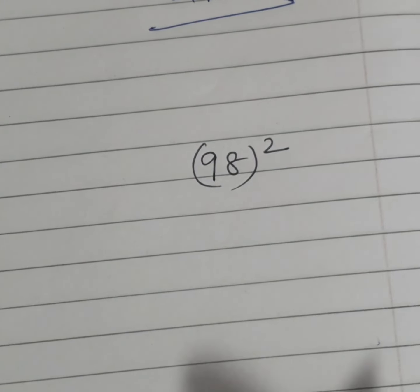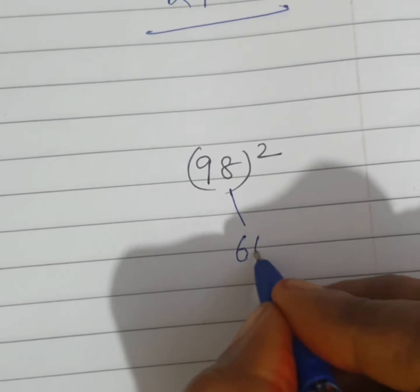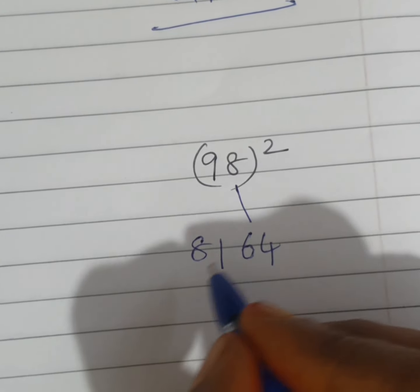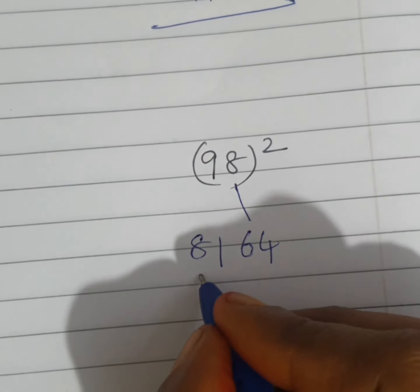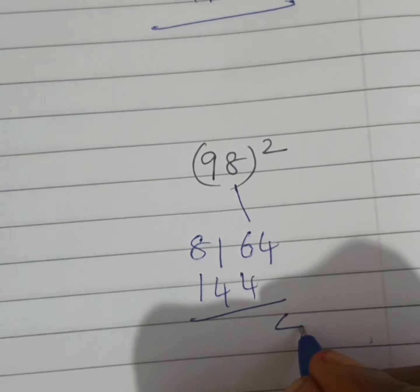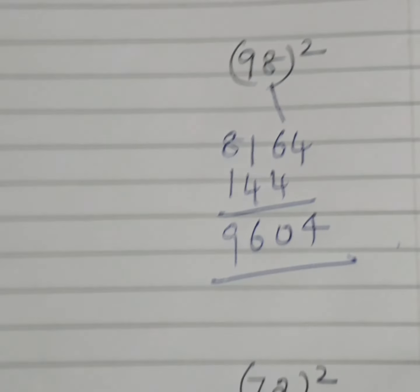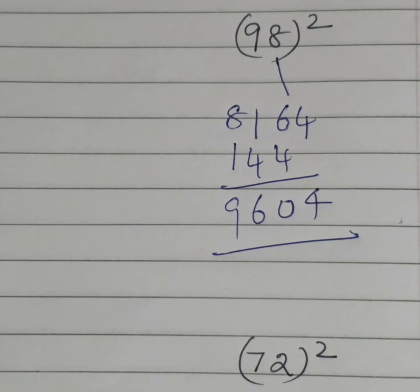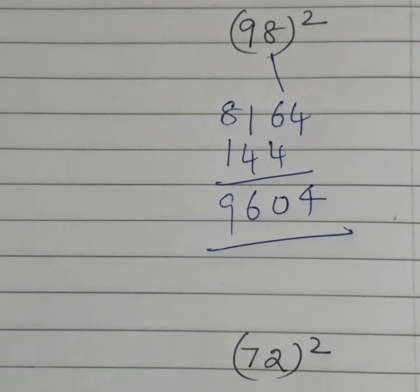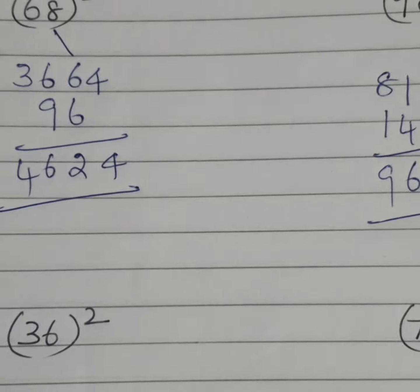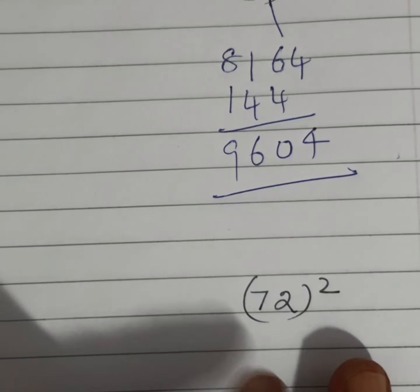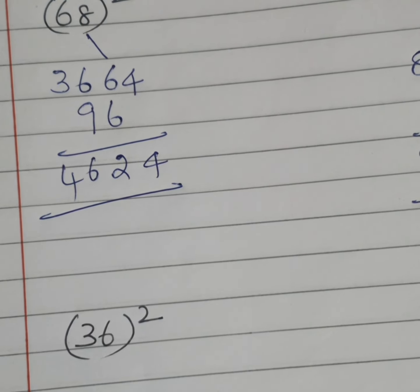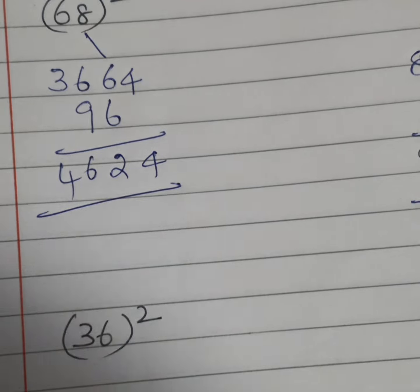Finding squares from 1 to 100 — this is the trick. For example, 8 square is 64, and 81 and 72 into 2 is 142. You can try some more problems. I have written 36 square and 72 square — you can find them. Practicing more problems, you can solve them very quickly.